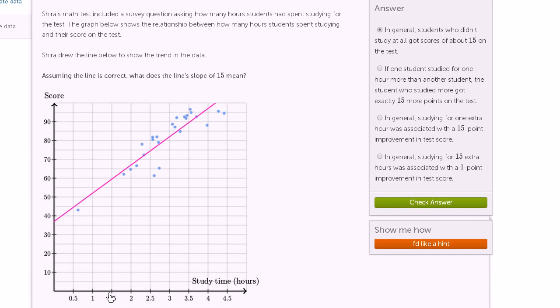So let's see. The horizontal axis is time studying in hours. Vertical axis is scores on the test. And each of these blue dots represent the time and the score for a given student.